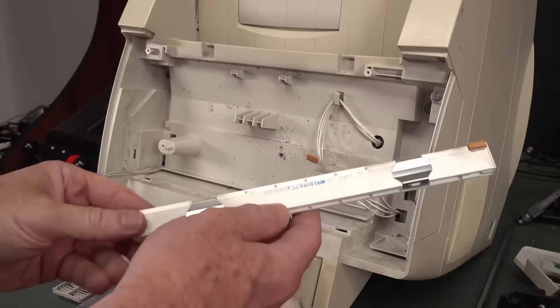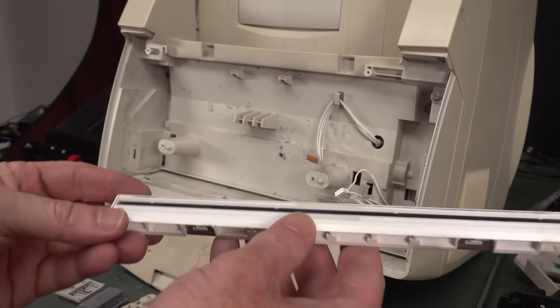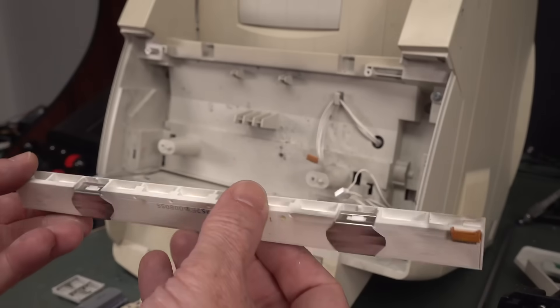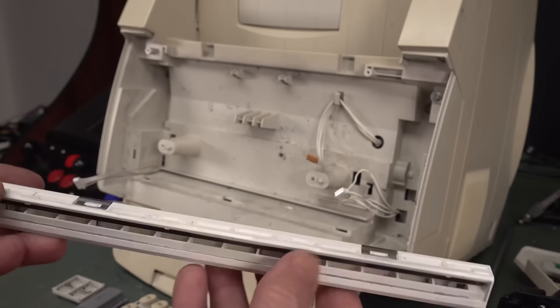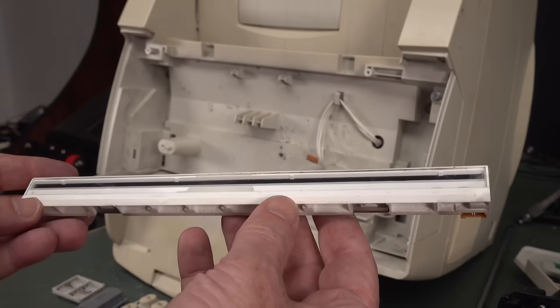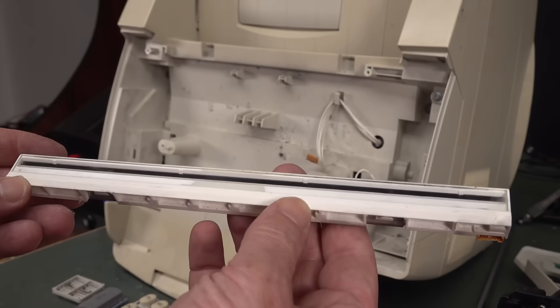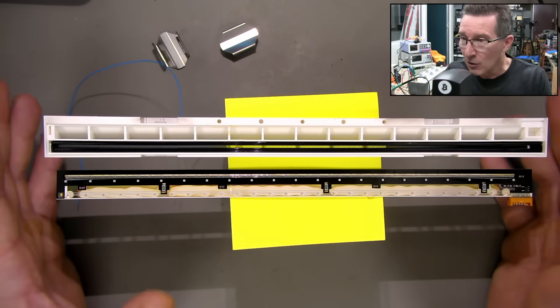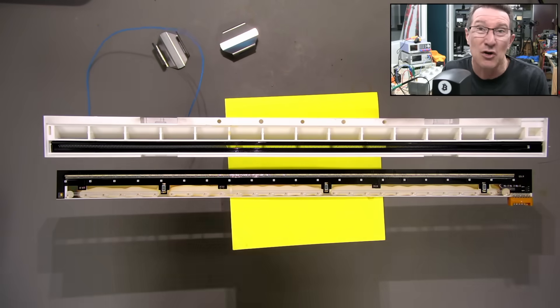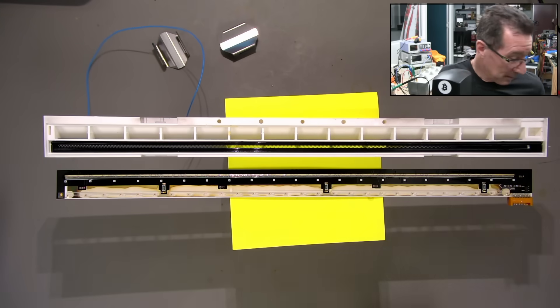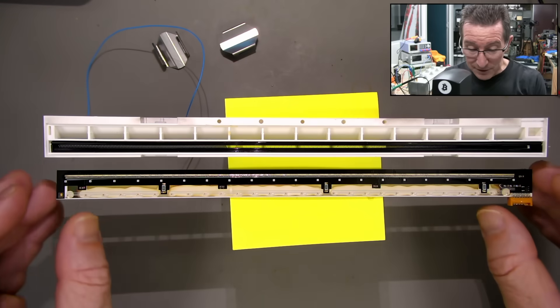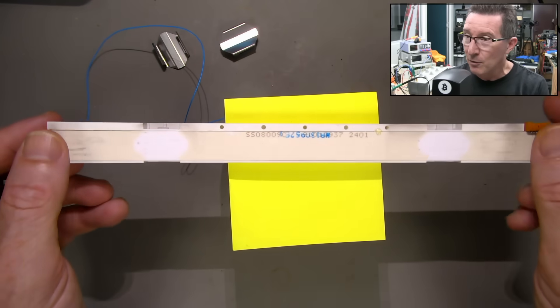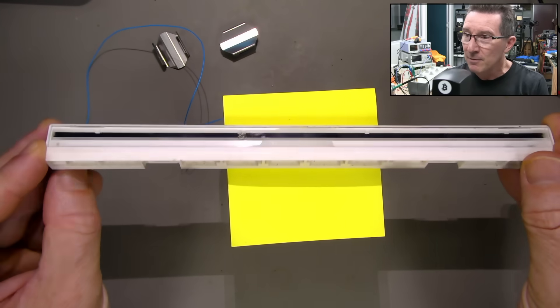So there's the sensor head. It comes out nicely and it's got an illumination array in there, and the actual linear scan head itself. So we can have a look at that under the microscope. Now this is only a monochrome unit, so this is not a color. I don't know how many grayscales it's got, effectively.